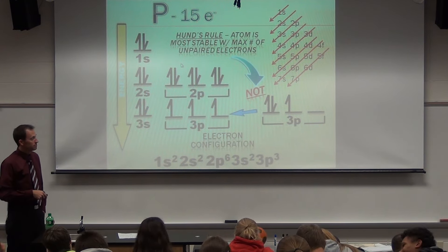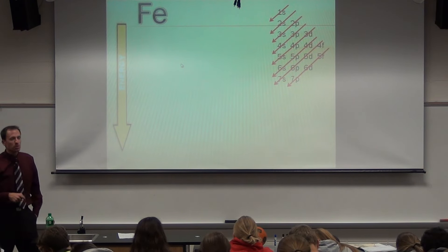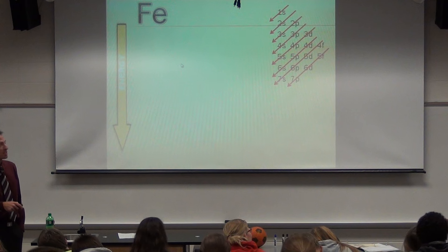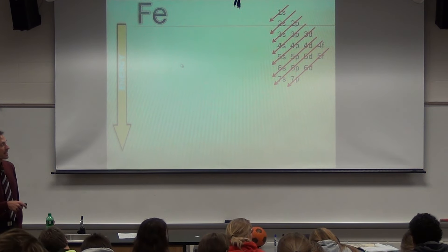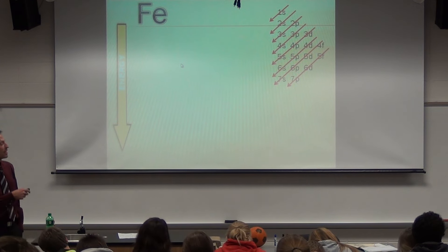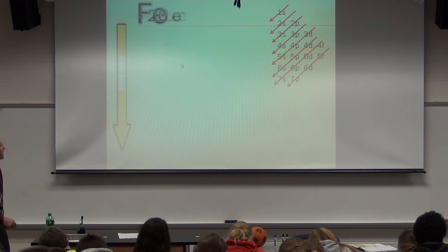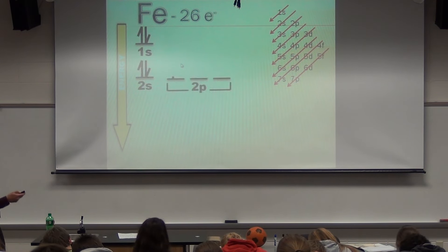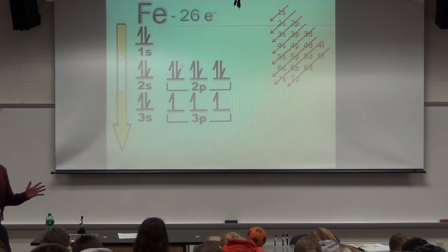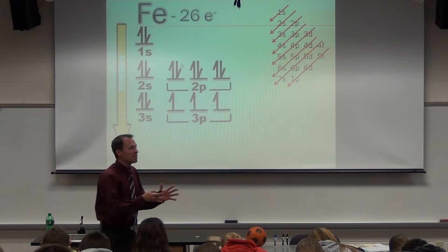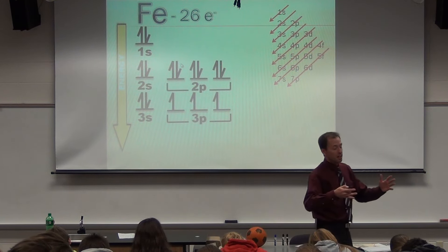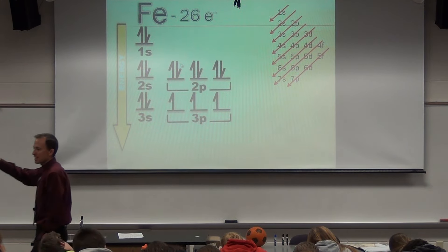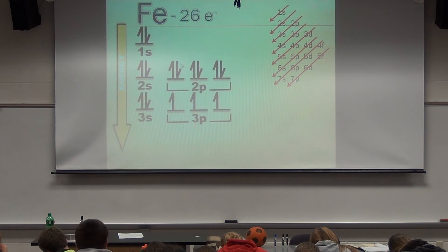What about iron? How many electrons? 26. We'll talk later about charges — if it's a +3 charge it changes the number of electrons — but right now there's no charge, so it's 26. We just did 15; it's going to be the same approach, just adding more. So it doesn't change at all: same starting point, just filling more. Take a second and map it all out so far — this one proves a final key point.